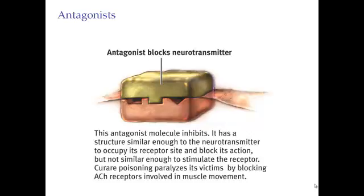As an example, curare is a poison that paralyzes the victim. It blocks the acetylcholine receptors involving muscle movements. You have receptor sites in your muscles that stimulate them to move. Acetylcholine is a type of neurotransmitter, and when curare blocks the reception of acetylcholine, you're paralyzed — your muscles can't move.